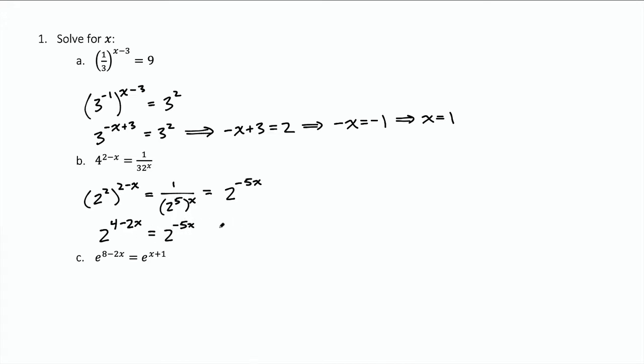And using the one-to-one property of the exponential, that tells me that the exponents must equal. So four minus two x equals negative five x. If I add two x to both sides, I get four equals negative three x. And then divide by negative three. And we get x equals negative four thirds.